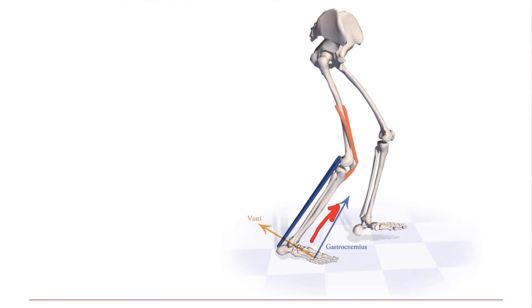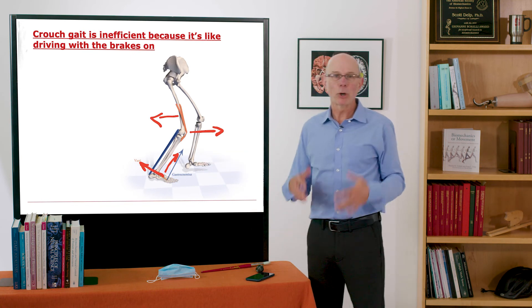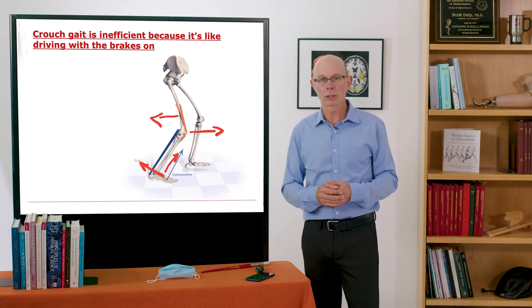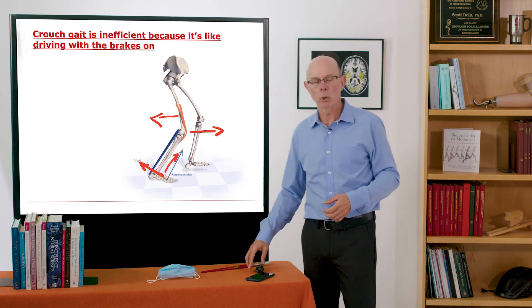It's producing a ground reaction force that is directed toward the front of your body, propelling you forward, but your vasti are still on. Your knees are flexed, you need your quadriceps and vasti to support your body weight and it's producing a negative acceleration. So you're driving forward but your brakes are still on, and driving with your brakes on is certainly going to cost more energy than this nice efficient mechanism we have during typical walking.